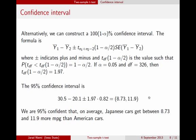So what does that mean? That means we are 95% confident that, on average, Japanese cars get between 8.73 and 11.9 more miles per gallon than American cars. This is a bit about how to construct confidence intervals and p-values by hand. More often, we'll use statistical software to do it for us.